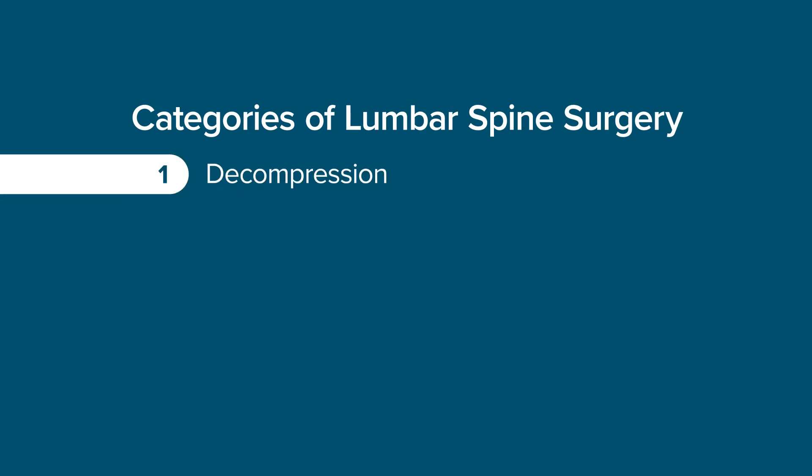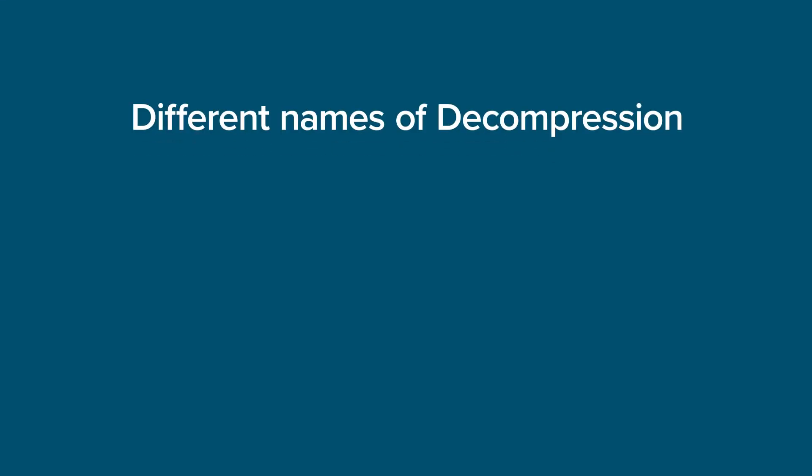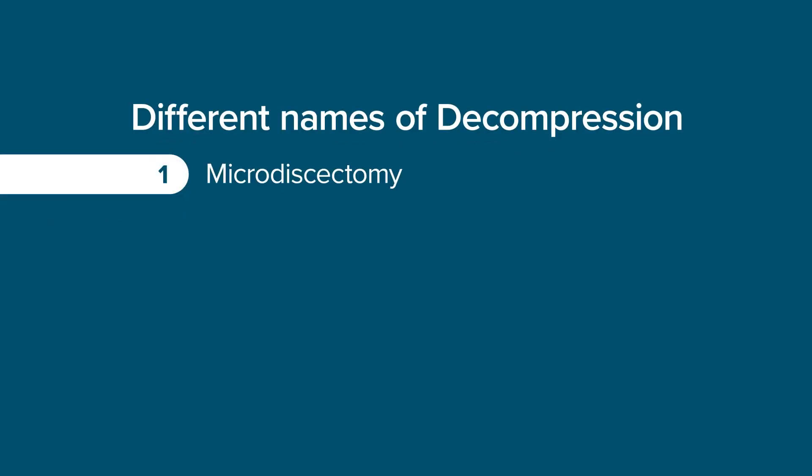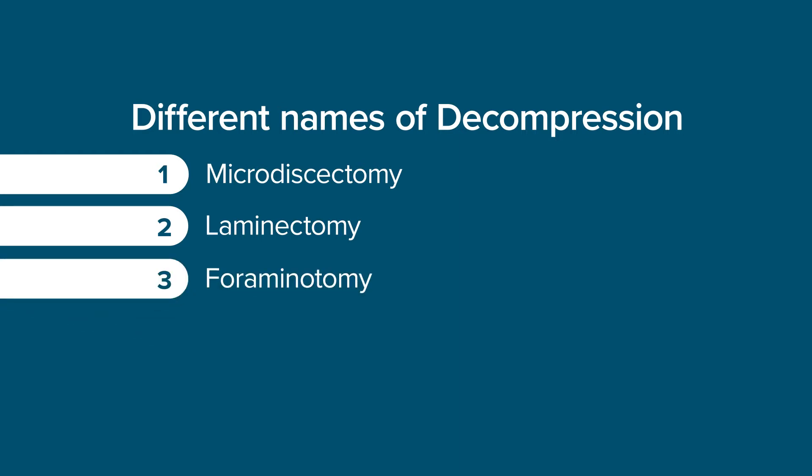When we talk about lumbar spine surgery, there are two broad categories. The first is a decompression, where we go in and physically take the pressure off the nerves. These decompressions go by a number of different names: micro discectomies, laminectomies, foraminotomies, or tubular discectomies. All these terms mean we're going in to take pressure off the nerve to help with low back or leg pain.